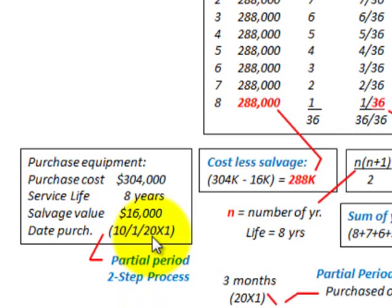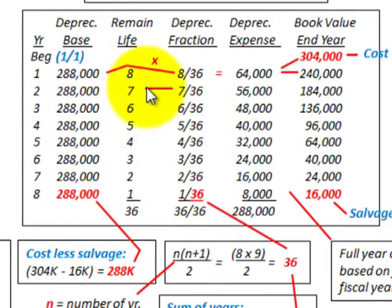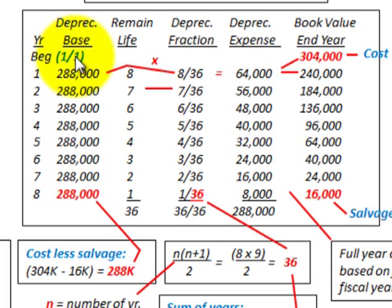What we're dealing with here is a partial period to determine our depreciation, and it's really a two-step process. The first thing we have to do is determine our depreciation based on a full year, based on the first day of the fiscal year. The fiscal year for this company runs from January 1st through December 31st.